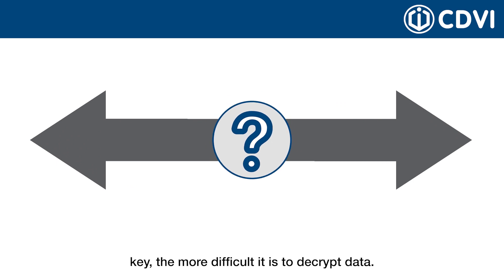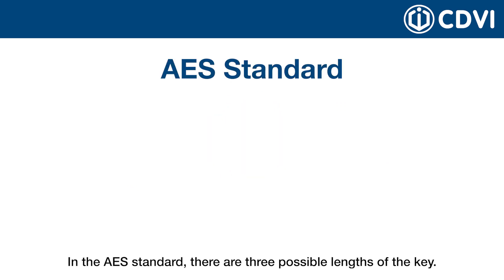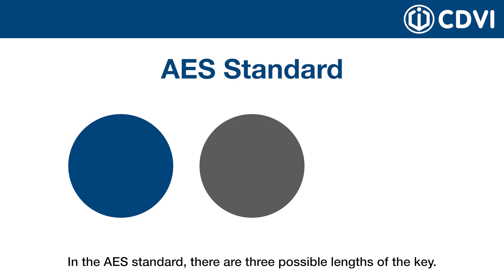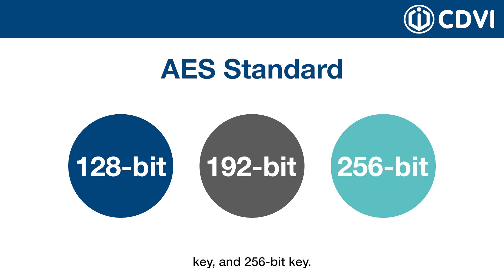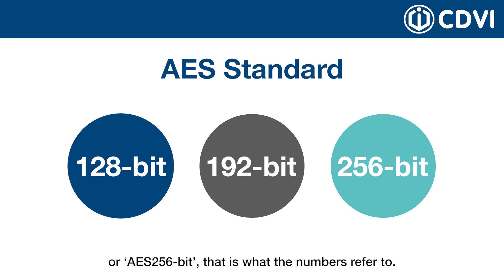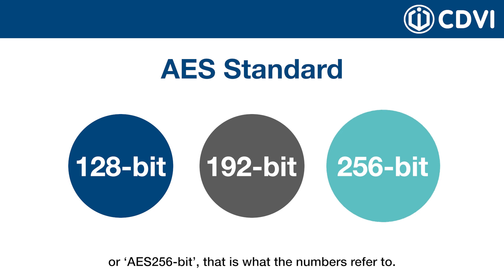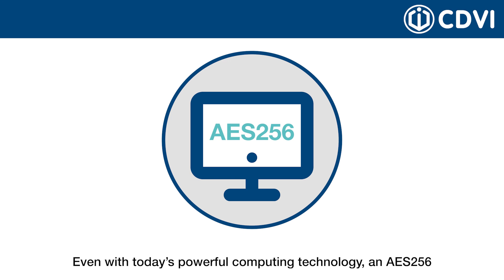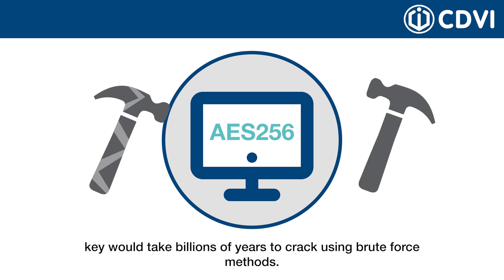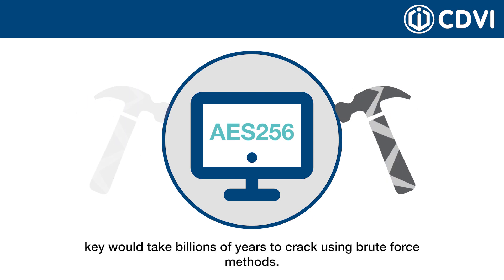Generally, the longer the key, the more difficult it is to decrypt data. In the AES standard, there are three possible lengths of the key: a 128-bit key, a 192-bit key, and a 256-bit key. When you see encryption described as AES 128 or AES 256-bit, that is what the numbers refer to. Even with today's powerful computing technology, an AES 256 key would take billions of years to crack using brute force methods.